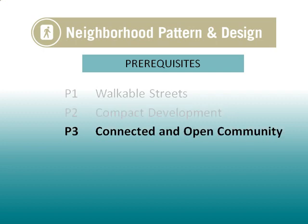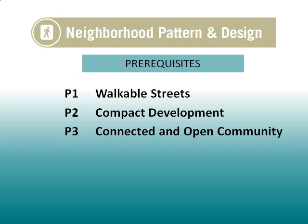Prerequisite Three is titled Connected and Open Development. For projects with internal streets, it mandates the minimum density of street intersections within the site and the maximum spacing of streets along its boundary. For projects without internal streets, it mandates street intersection density within a one-quarter mile area of the project boundary. These three prerequisites can all be controlled by the developer, unless the project does not have internal streets, in which case the site must be surrounded by an area with sufficient street intersection density. LEED ND actually encourages streetscape, density, and connectivity levels much greater than required by the prerequisites. Each prerequisite in this category is also repeated as a credit with much higher threshold levels.